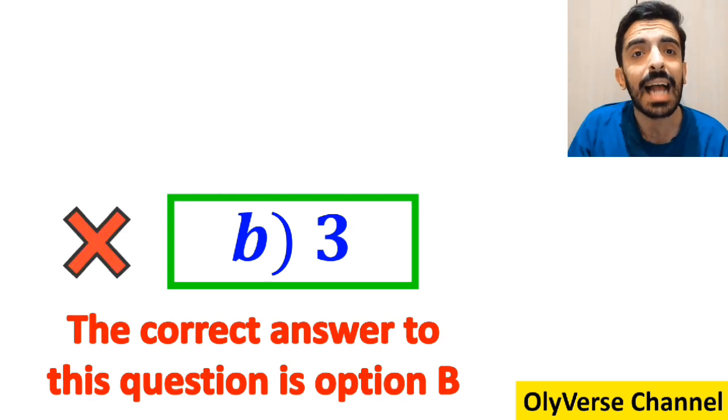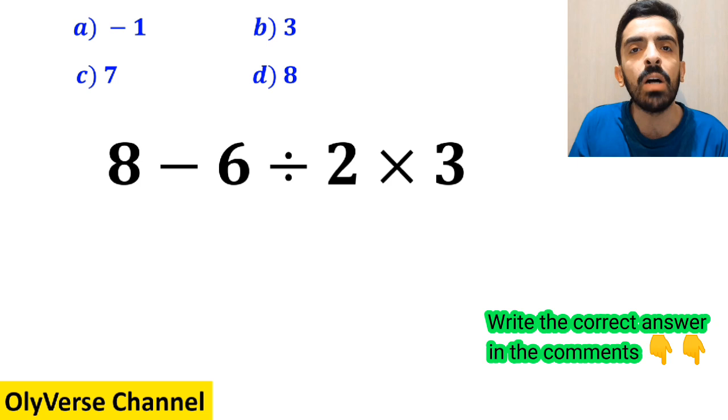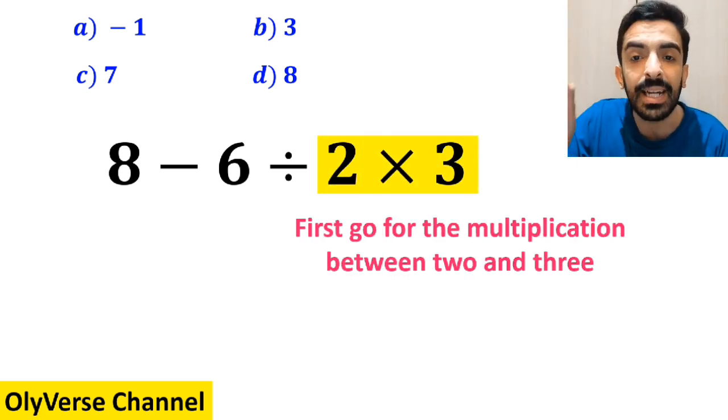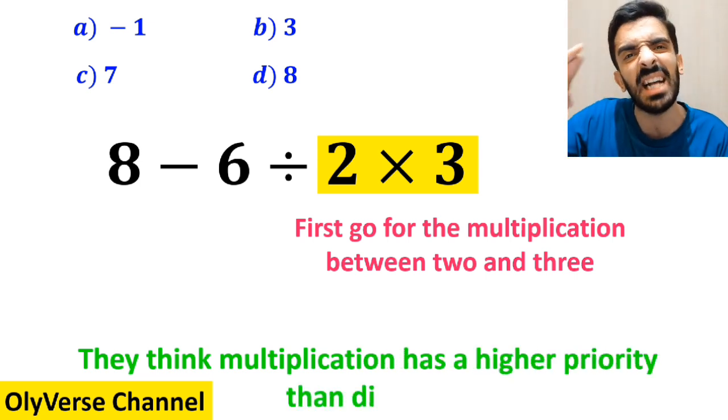However, this answer is actually incorrect. Also, some other people to solve this question first go for the multiplication between 2 and 3 because they think multiplication has a higher priority than division.